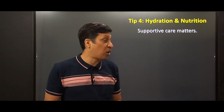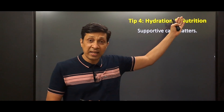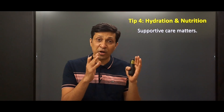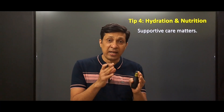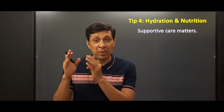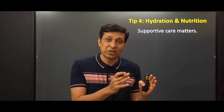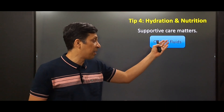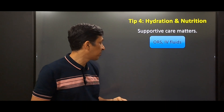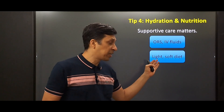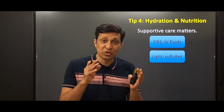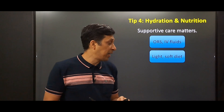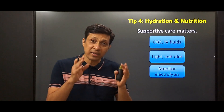The fourth tip is always maintain hydration and nutrition — supportive care matters. A typhoid fever patient is weak, dehydrated, and often malnourished, and malnourishment always delays healing. So always be generous with IV fluids, give ORS, and encourage the patient to have a light and soft diet while avoiding fat-containing food. You also have to monitor the electrolytes.